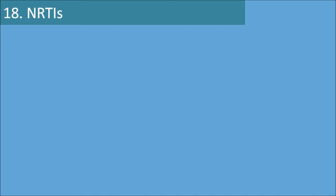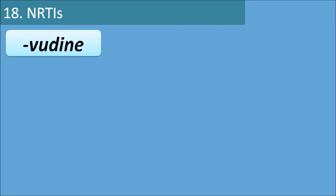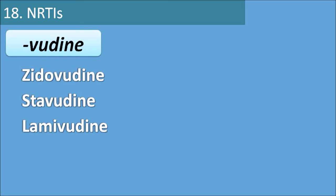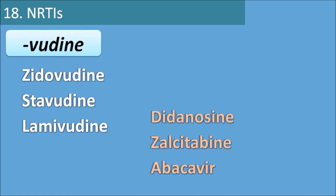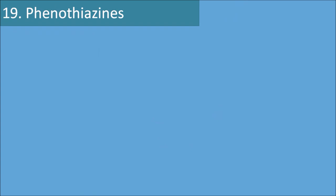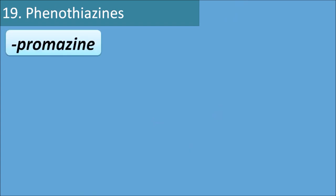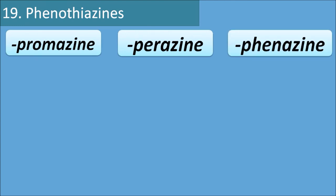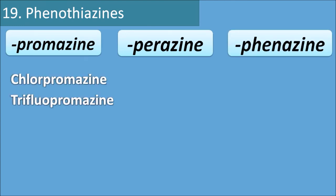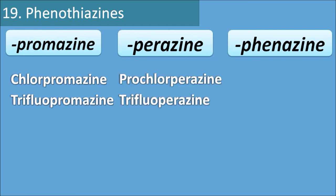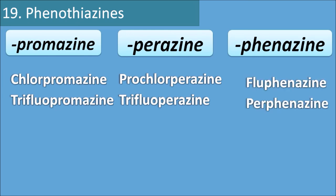The eighteenth category is nucleoside reverse transcriptase inhibitors (NRTIs), ending with the suffix 'udine' — examples include zidovudine, stavudine, and lamivudine. Exceptions include didanosine, zalcitabine, and abacavir. The nineteenth category is phenothiazines, with the suffixes 'promazine', 'perazine', and 'phenazine'. Chlorpromazine and triflupromazine end in -promazine; prochlorperazine and trifluoperazine end in -perazine; fluphenazine and perphenazine end in -phenazine.